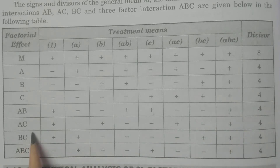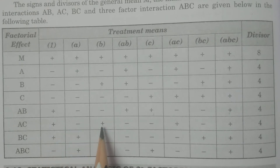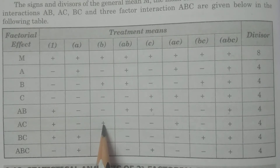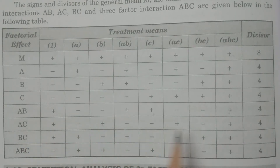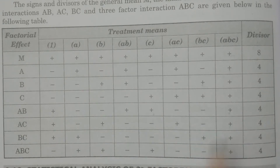For interaction AC: 1 is plus, B is also plus, AC is plus, and ABC is plus — having the positive sign. The remaining are minus. Divisor is 4.